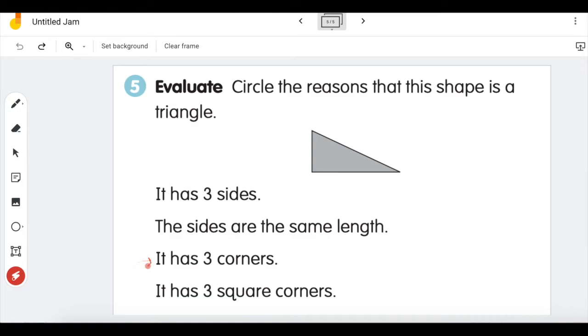Sentence number three. Is this a triangle because it has three corners? Do all triangles have three corners? If they do and it's true we'll circle it. If not we won't do anything.